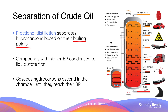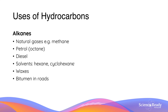This method of separation is repeated until all the components of crude oil are successfully separated. In general, fractional distillation separates larger hydrocarbons — i.e. those with higher boiling points — first, followed by smaller hydrocarbons, i.e. those with lower boiling points. Once hydrocarbons are separated and obtained, what are they used for?